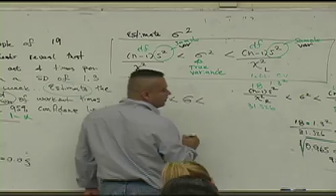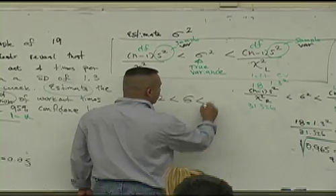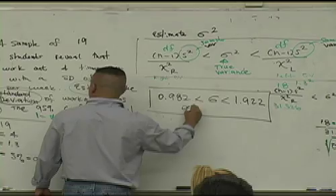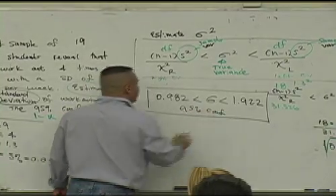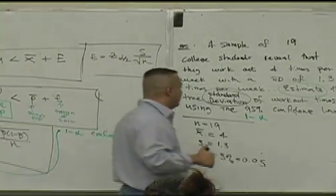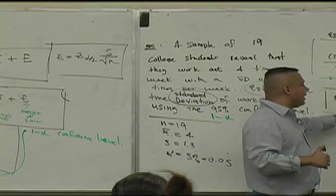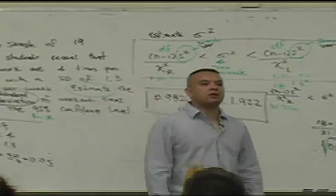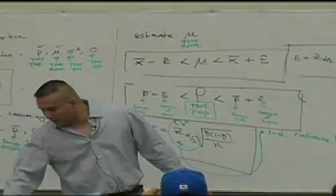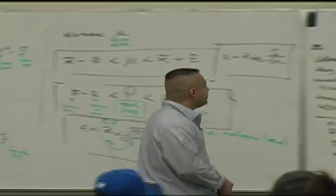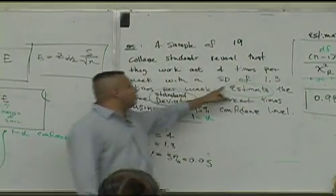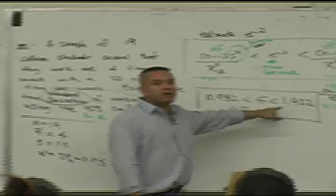Less than 0.982. So, we can say this with 95% confidence: the true standard deviation is between 0.982 times per week and 1.922 times per week. We can say that with 95% confidence — meaning that if I take a sample of size 19, an arbitrarily large number of samples, my sample standard deviation is going to be between these two values 95% of the time.